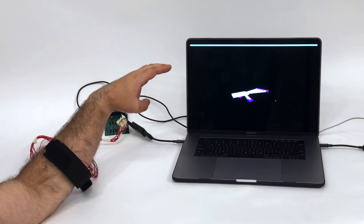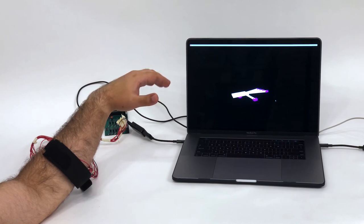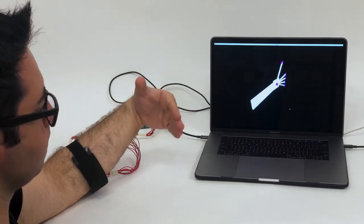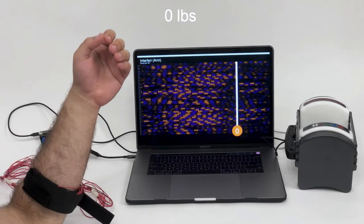We also tested continuous tracking of the hands and arms, including hand pose, wrist angle, and estimating the mass of free weights.